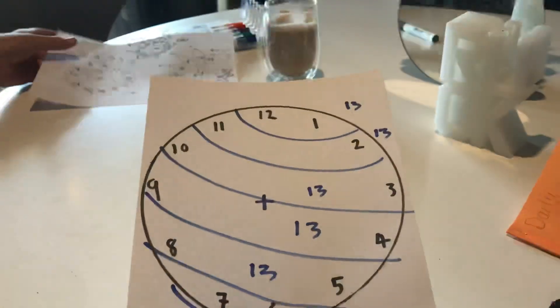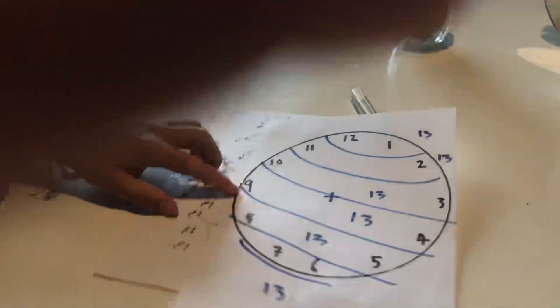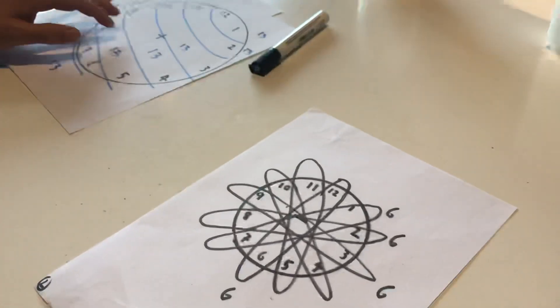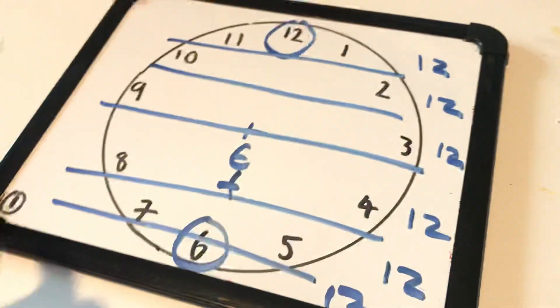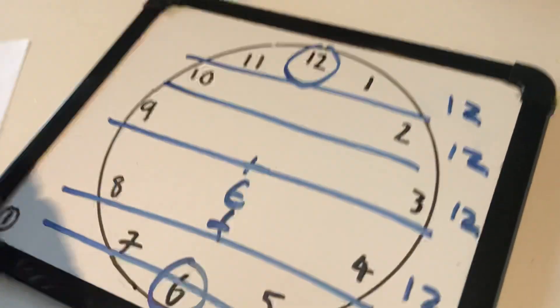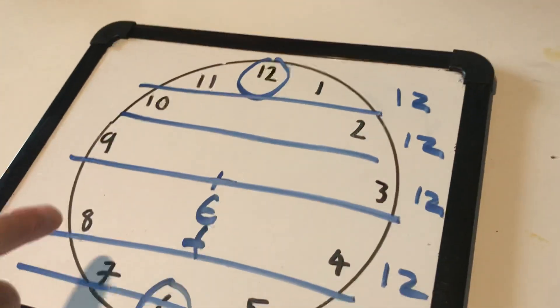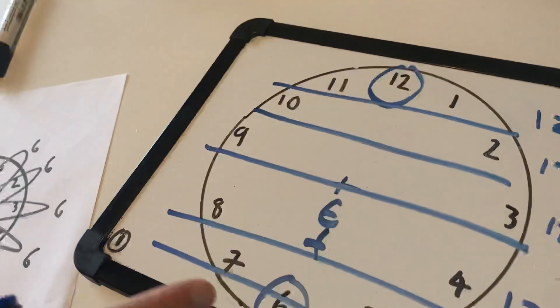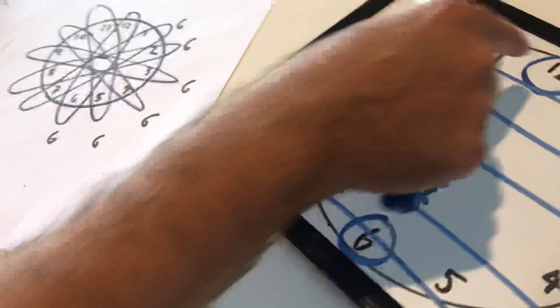So, three little tricks using the face of the clock. First one was this one. On the whiteboard? Circle the 12. 11 and 1. 10 and 2. 9 and 3. 8 and 4. 7 and 5. 6 plus 6 is 12. And then you've got 12 at the front.